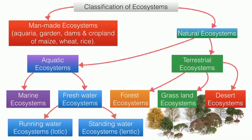Natural ecosystem is further divided into two parts: aquatic ecosystem and terrestrial ecosystem. Aquatic ecosystem is divided into marine ecosystem and freshwater ecosystem. Marine refers to seawater ecosystems, while freshwater includes rivers, lakes, and ponds. Freshwater is further divided into running water (lotic) like rivers, and standing water (lentic) like ponds. Terrestrial ecosystem is divided into forest, grassland, and desert ecosystem.